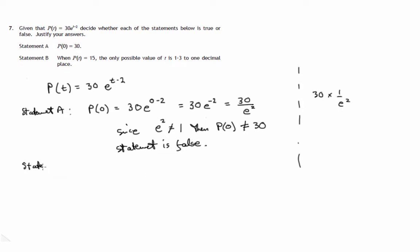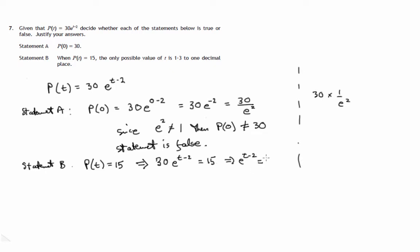Moving on to statement B. We're asked to look at p of t being equal to 15, and whether there is only one possible value for t of 1.3. We know that p of t is 30 lots of e to the power t minus 2, and that has to equal 15. Dividing both sides by 30, we get e to the power t minus 2 equals 0.5.